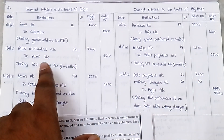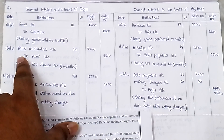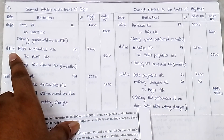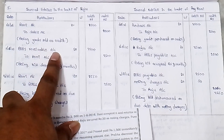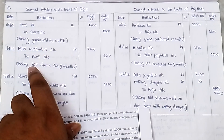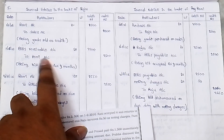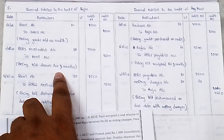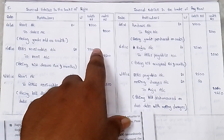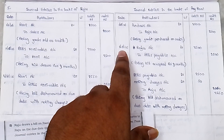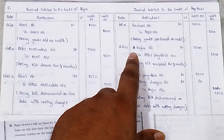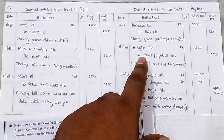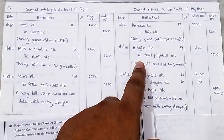When the bill is drawn and accepted, Rajoo received the bill. Same date 1/6/2016: Bills Receivable account debit to Rani account, being bill drawn for three months — amount 2500.